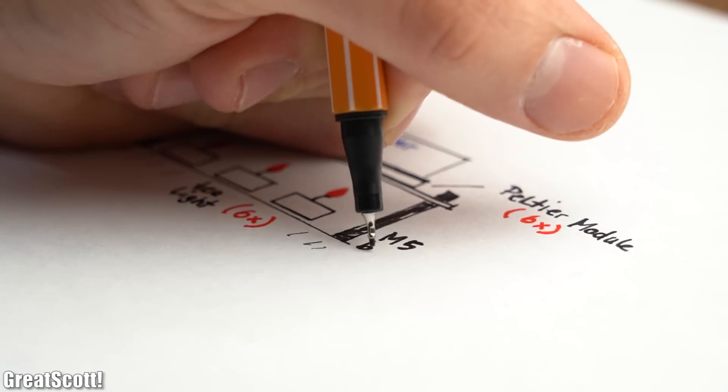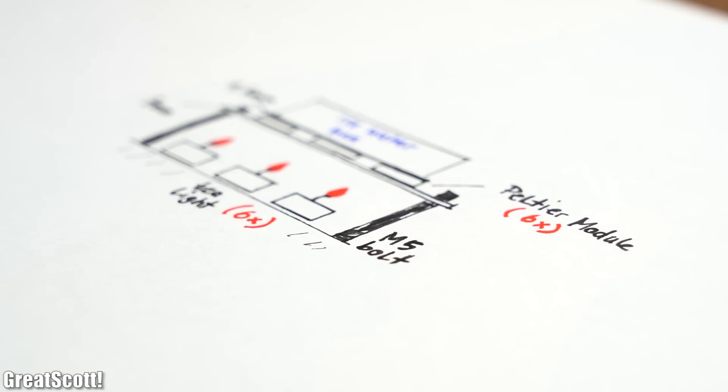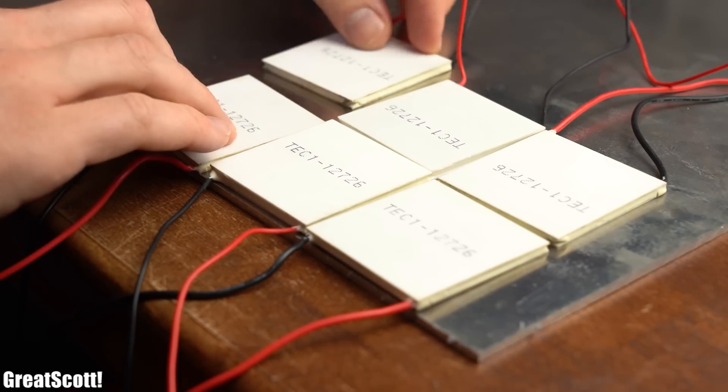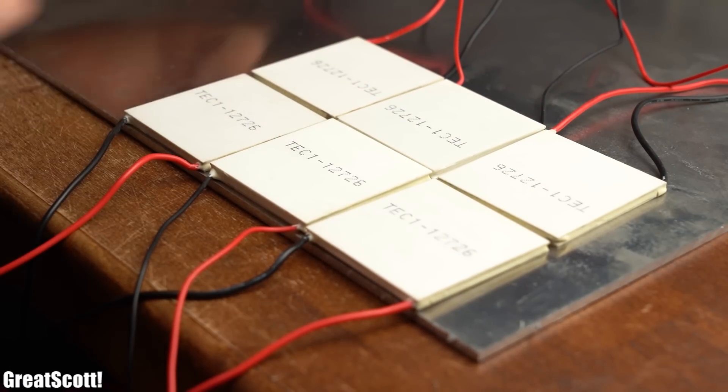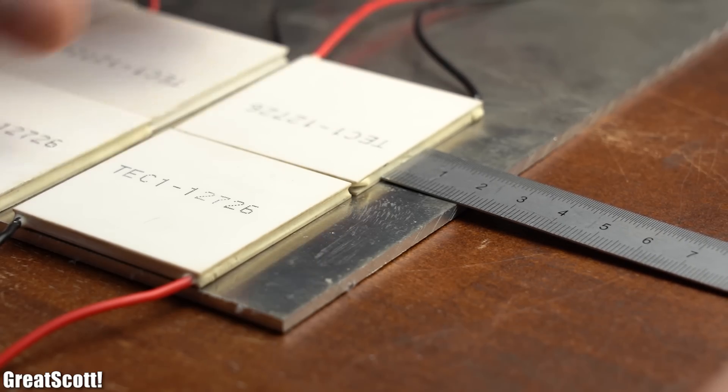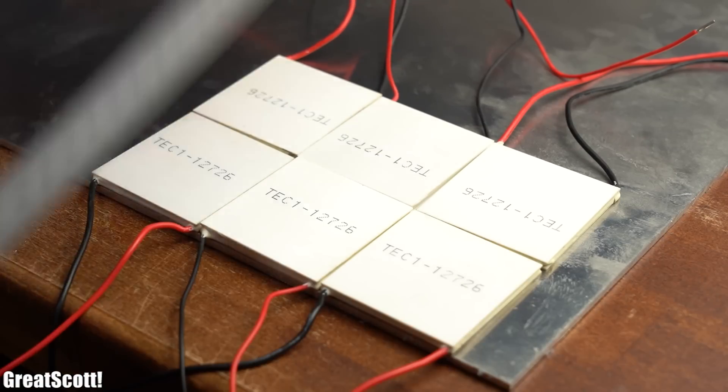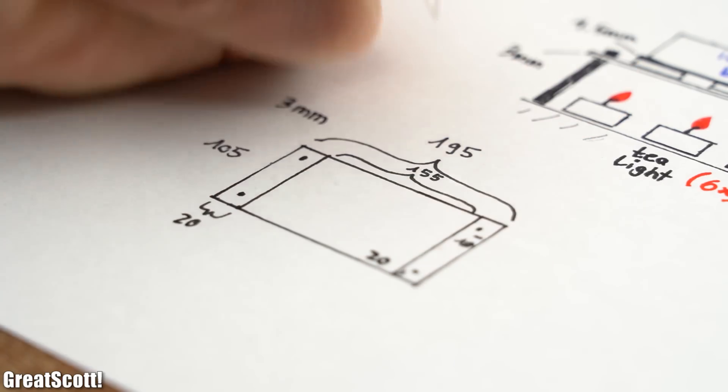I will also be using some M5 bolts and nuts to suspend this construction in the air. So I started by placing the 6 Peltier modules onto the thicker aluminum piece with a distance of 2cm from the left and right edge in order to figure out the necessary dimensions for the heatsinks which ultimately look like this.